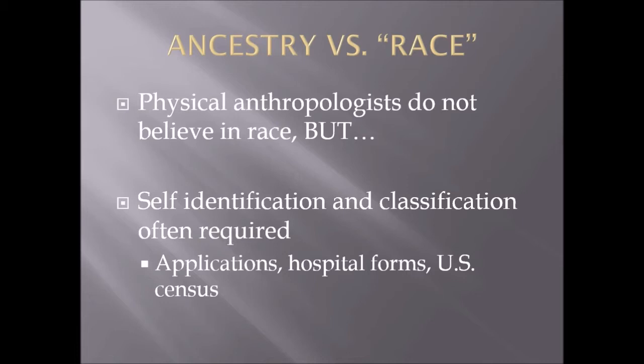First and foremost, we have to deal with ancestry versus the term race. Race is not used by physical anthropologists. We don't use it because race is a culturally derived term. What one culture considers one race — like, for example, black — a different culture may determine as white, which is interesting. There's no hard and fast rule, and there is no biological marker for race. However, people self-identify with race — it's a classification.